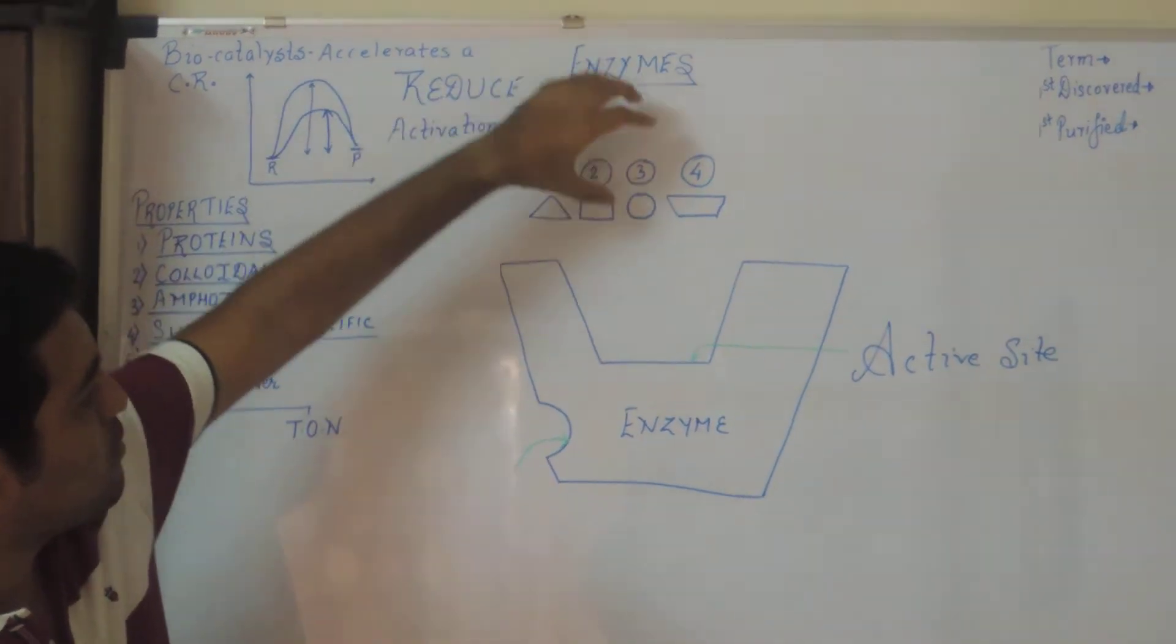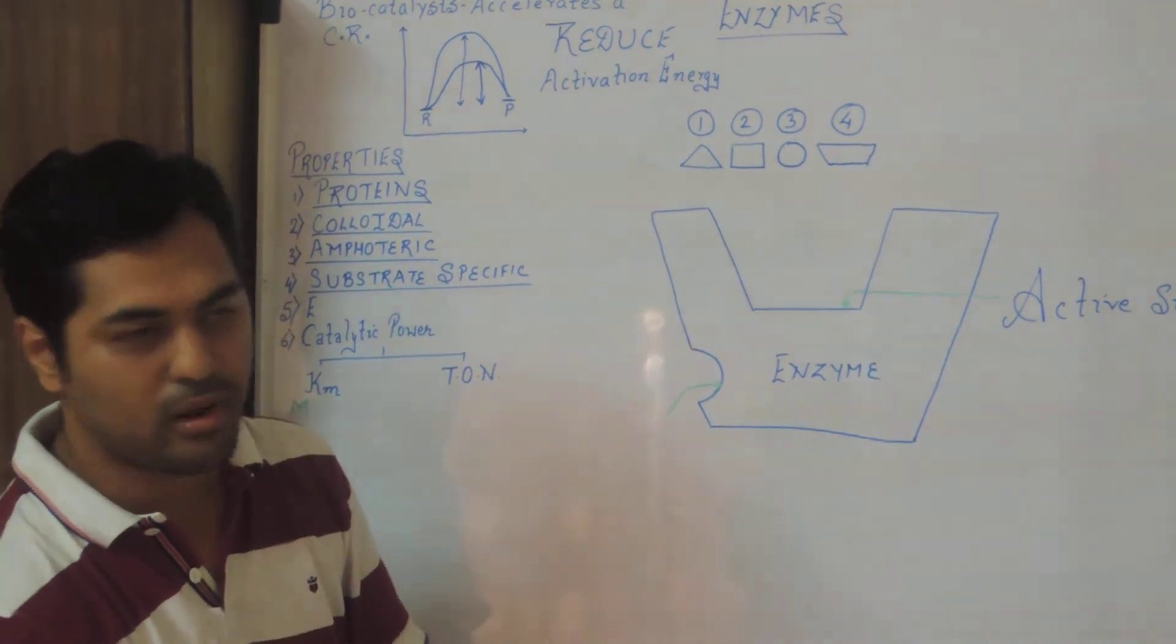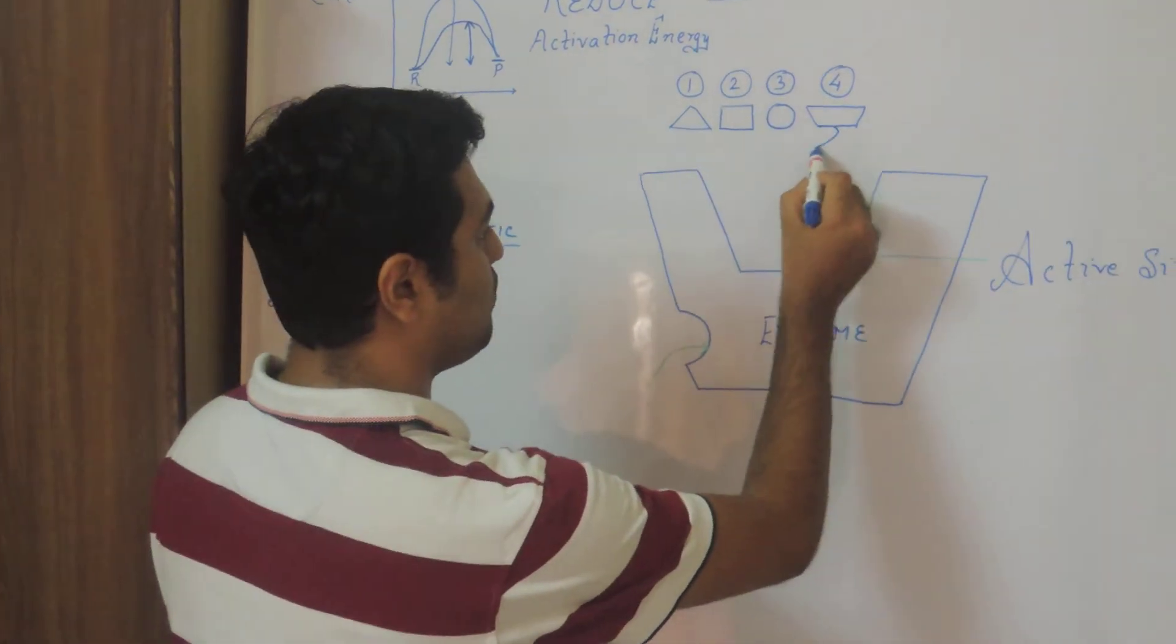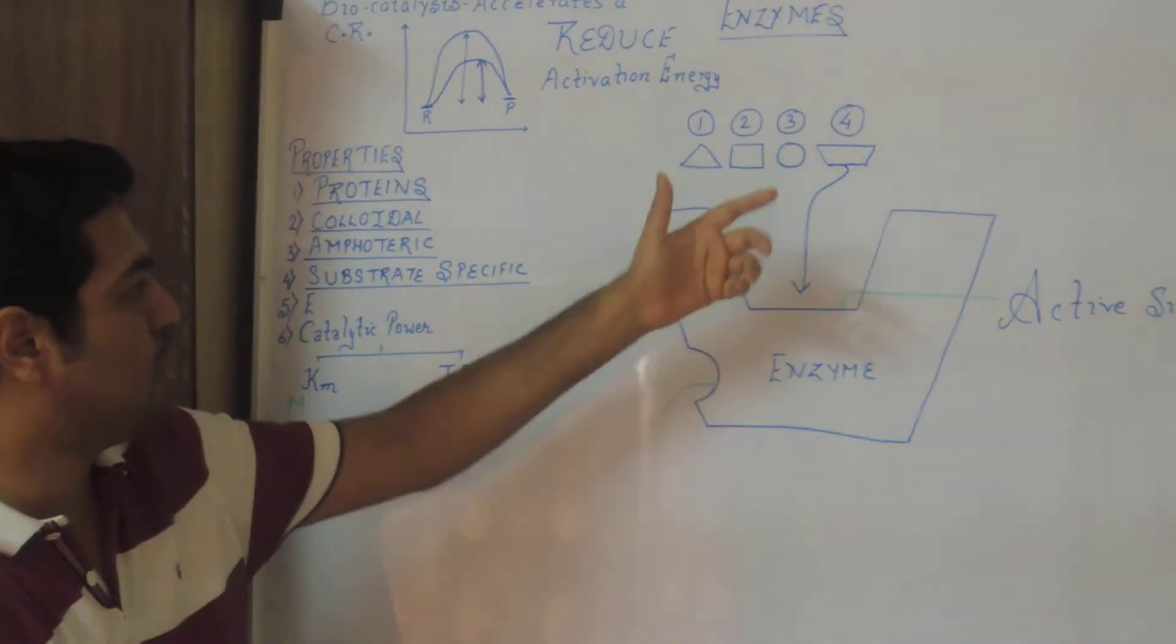And any specific type of substrate can bind with the active site. Then you can visualize from the above diagram that at least substrate number 4, that can come and bind with the active site, and it can be converted into product.